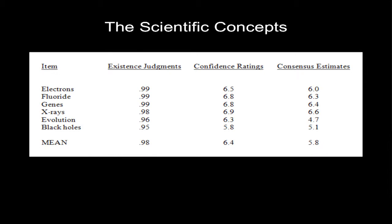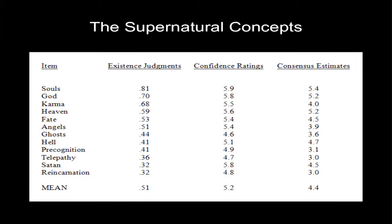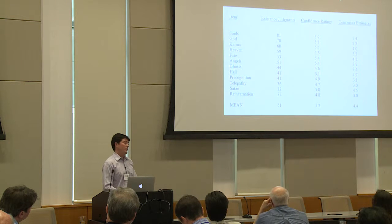These are the data for the scientific concepts — average existence judgments, confidence ratings, and consensus estimates. For all seven entities we asked about, pretty much everyone believed that they existed, there was strong consensus among participants, they were highly confident in their beliefs, and they thought that most Americans would agree with them. For the supernatural concepts, ranked from most believed in to least believed in, on average people endorsed the existence of half of these entities, and their confidence and consensus estimates were lower. We only looked at data where participants said they do in fact believe in the existence of the entities, filtering out cases where they said they don't believe.